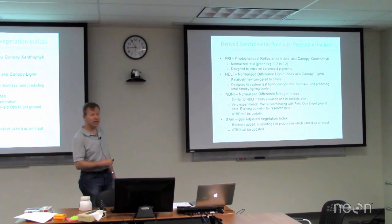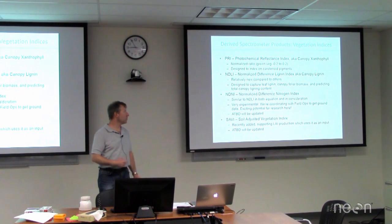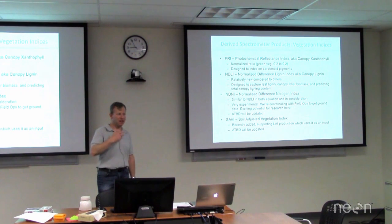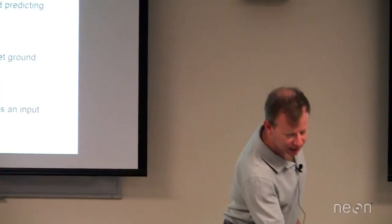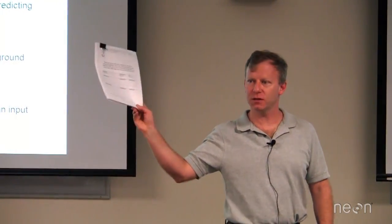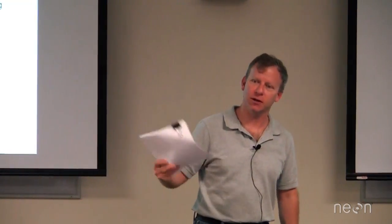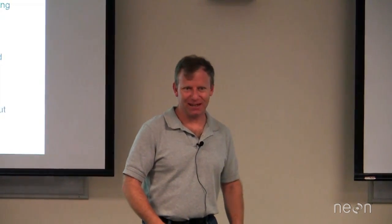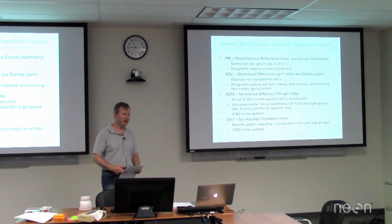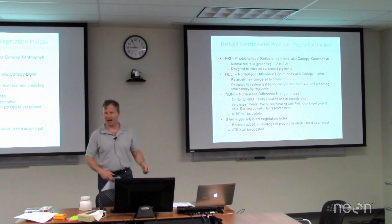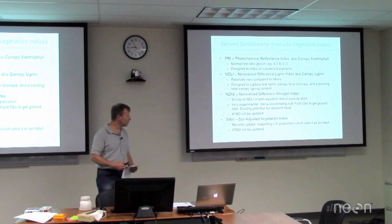That is so new it's not in the ATBD yet — the Algorithm Theoretical Basis Document. Basically it details why you made this data product, the formula, whole sections on the uncertainty, et cetera. For the handful of indices we've got here, that document is 31 pages. I think it's awesome reading because I wrote it, but if you're having trouble going to sleep it's probably a good fix for that too. It does have a lot of good detail, so I don't want to go through all that in 25 minutes.